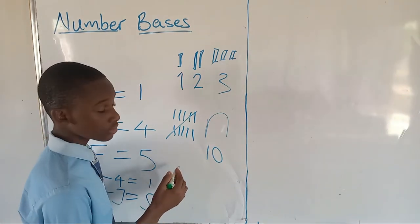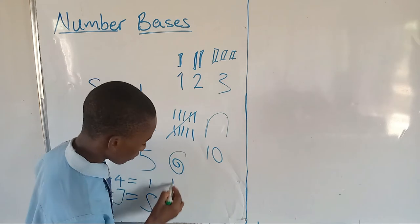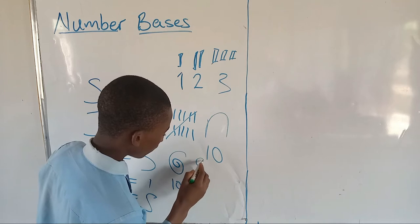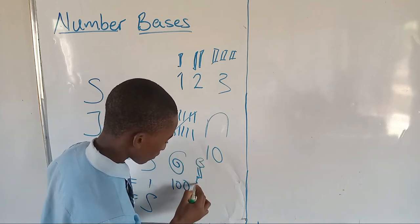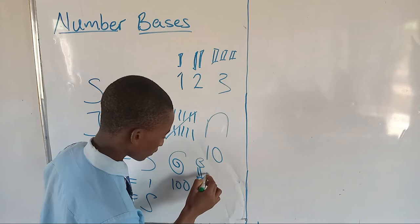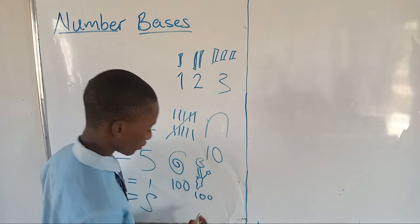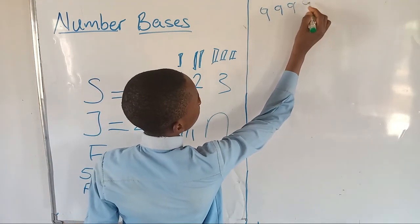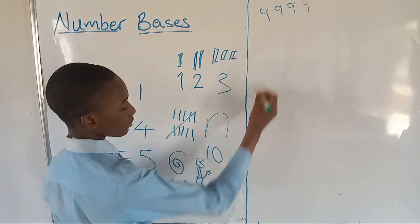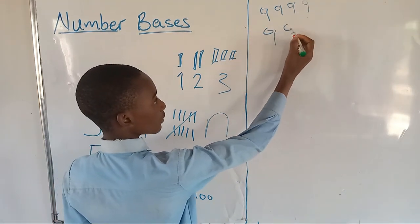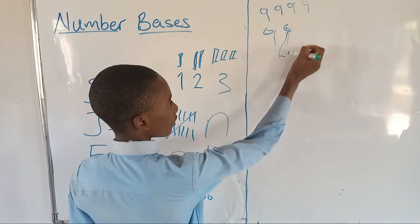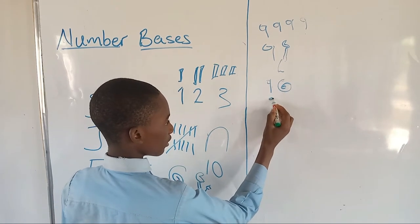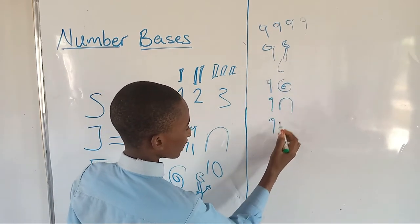So 100 is going to be a spiral like this. Then 1,000 is going to be a flower. So if you have to write 9,999, you will have to draw 9 of the flowers, 9 spirals, 9 horseshoes, and 9 rods.